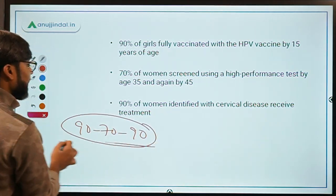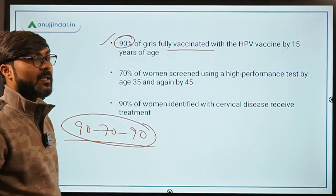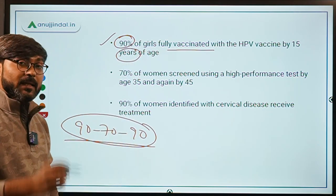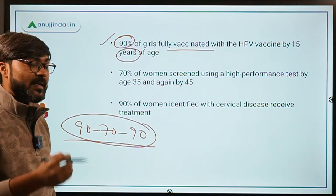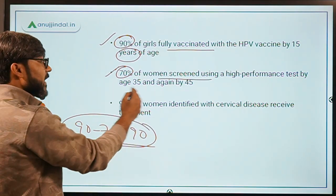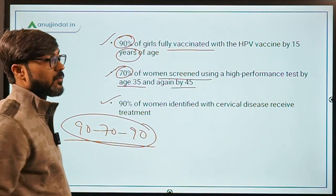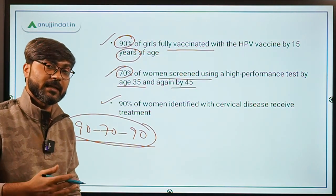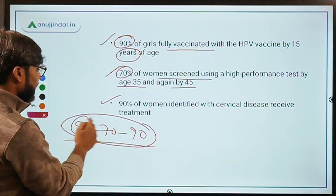There is a strategy announced known as the 90-70-90 strategy. This stands for: 90% of girls fully vaccinated with the HPV vaccine by 15 years of age; 70% of women screened using a high-performance test by age 35 and again by 45; and 90% of women identified with cervical cancer to receive treatment.